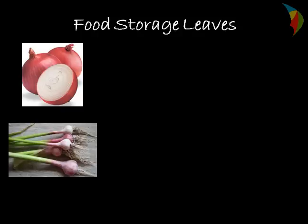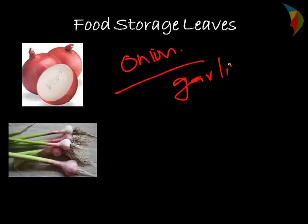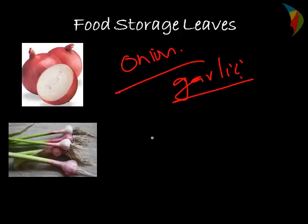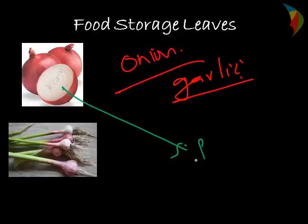The next modification is leaves modified for storage of food. Common examples are onion or garlic, where the leaves are modified to store food. The leaves become fleshy and help in providing vital supplies to the plant during times of adverse conditions.